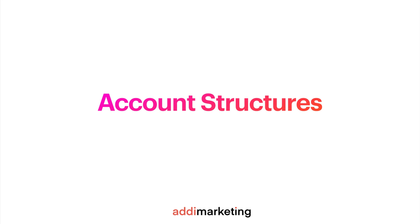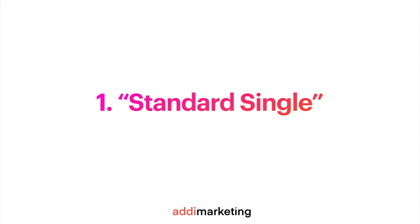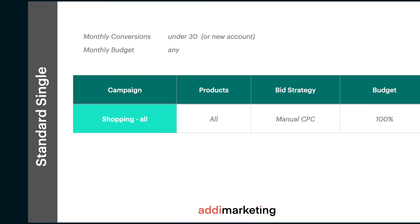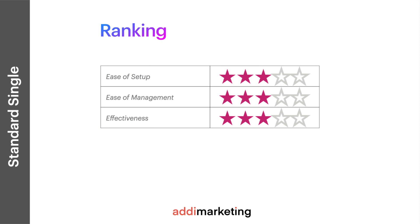Let's look at some examples of campaign structures. When you have a new account or under 30 conversions a month, I recommend running a standard shopping campaign with manual cost-per-click. The goal is to get some traffic and conversions before upgrading to another campaign structure. Use all the budget you allocate for shopping ads for this campaign. The standard single campaign is harder to set up and manage than Pmax, and you get average performance at best, but you might not have any other choice. With such low conversion volume, I don't recommend using other campaign types because it's very easy to waste your money without enough data.